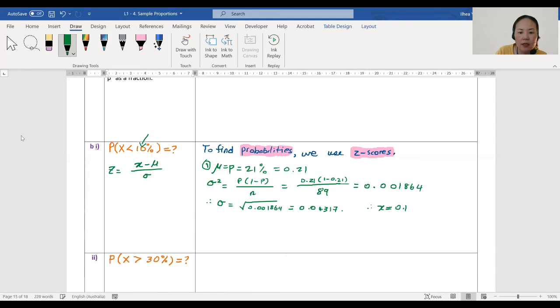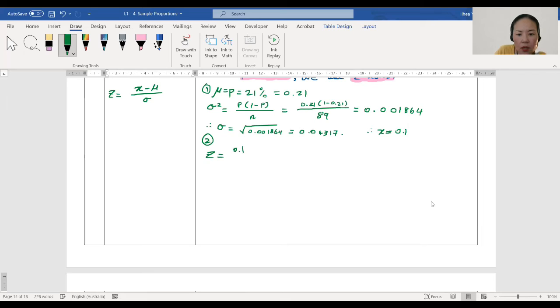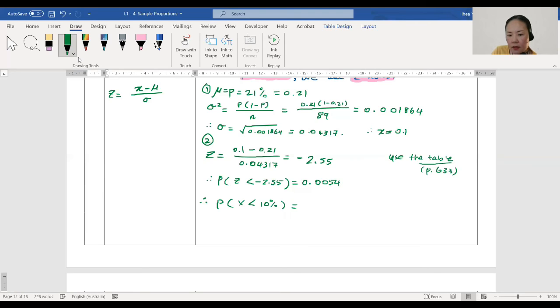What's x? x is 0.1. z equals x, which is 0.1, minus mu, which is 0.21, over sigma, which is 0.04317. Put that in; you'll get negative 2.55. So it's below zero, below average for the z-score. You have to use the table. If you do that, you'll get z is less than negative 2.57, and your value from the table will be 0.0054. So the probability of x less than 10% is 0.0054. That means the probability that fewer than 10% of this sample of people has asthma is 0.0054.